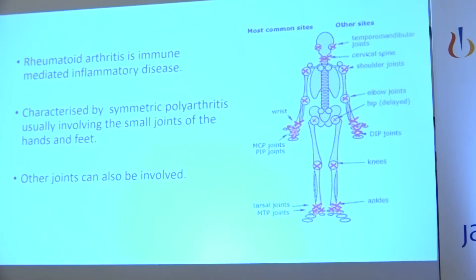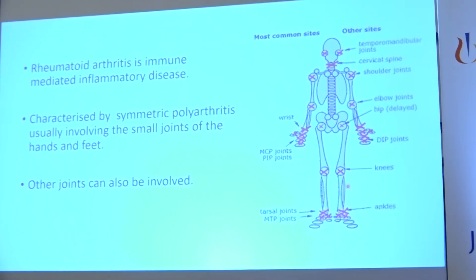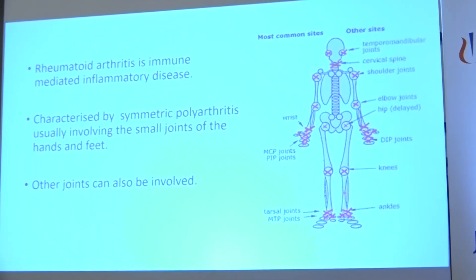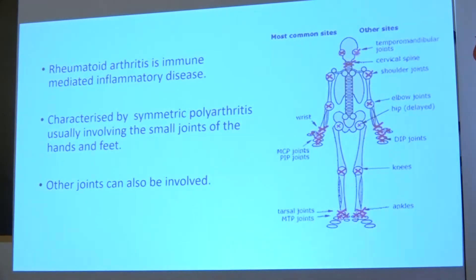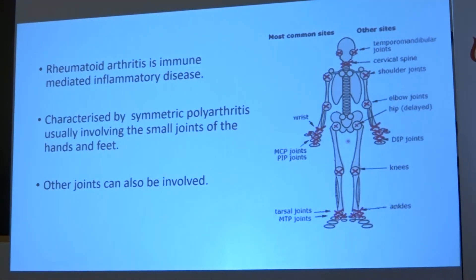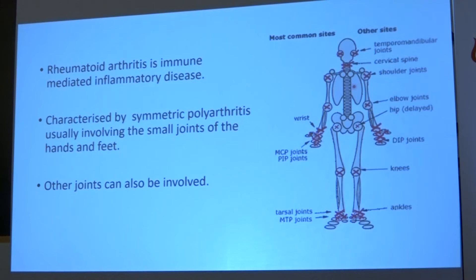Rheumatoid arthritis is usually characterized by symmetrical — meaning involving both sides of the body — polyarthritis, mainly involving the small joints of the hands and the feet. But other joints can be involved as well: the elbows, shoulders, temporomandibular joint, hip joint, and knee joint. Usually it spares the spine except for the cervical spine in advanced stages.